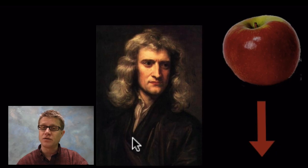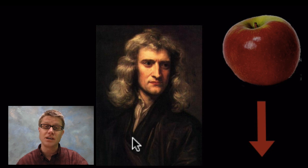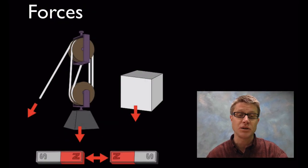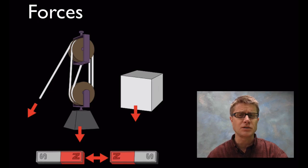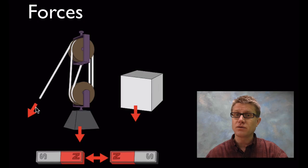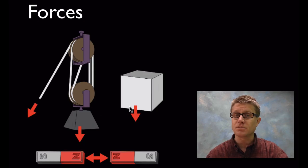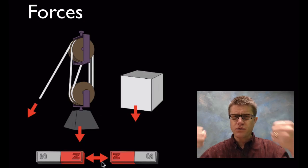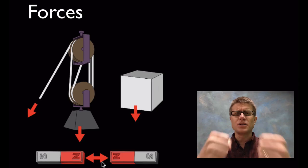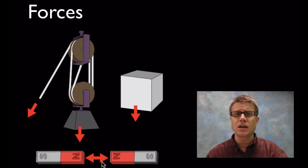Did an apple just fall on his head and all of this came to him? No, it's just a story. But he did a lot of work and even came up with calculus to help explain it. A force is a push or a pull, and it's best represented with an arrow. Pulling on a pulley is a force, there's also the force of gravity down on a box, and there's also a force between magnets as we try to push them together.